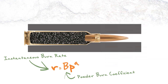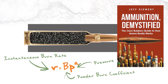P is pressure — the pressure inside the case during the shot at any given point in time. And A is a coefficient. I'm not really sure what A is exactly; I had not seen this equation until I read Jeff Sewert's book, Ammunition Demystified.